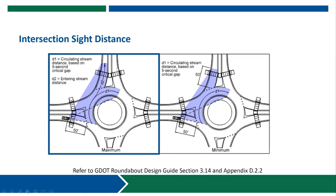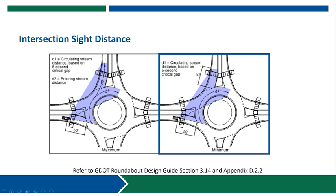GDOT considers this a maximum sight distance case where you would have unconstrained conditions and are able to accommodate sight lines for the full D2 movement. In some situations you may have a sight constraint like a guardrail or bridge abutment in the corner of the intersection that may limit the practical intersection sight distance that can be achieved. For those situations, GDOT has developed a minimum sight distance criteria that still looks at a 50-foot-back-from-the-yield-line starting point for the vehicle, and still looks at the same D1 distance around the circulatory roadway for conflicting vehicles, but when looking to the upstream leg only looks 50 feet upstream of the entry on that next adjacent leg. This creates a slightly smaller sight distance triangle consideration, which limits the additional space needed in the corner of the intersection.